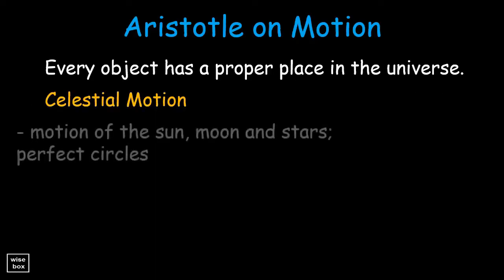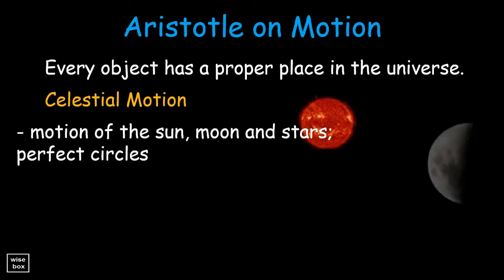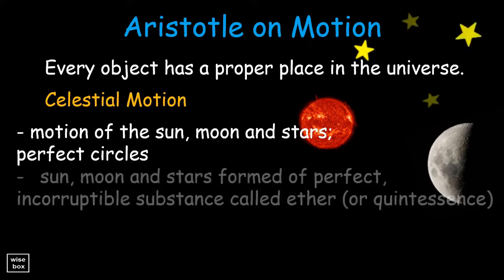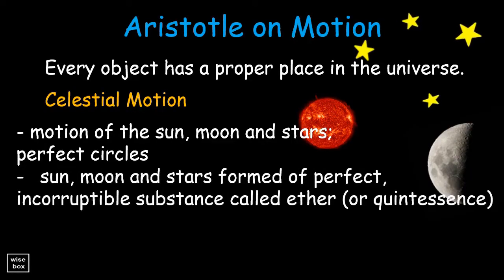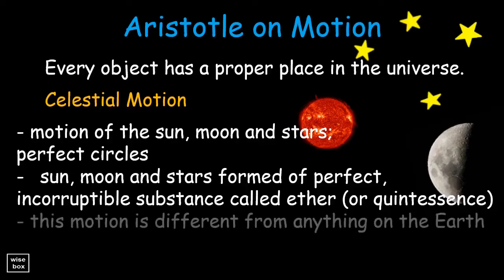Celestial motion includes motion of the sun, moon, and stars in perfect circles. The sun, moon, and stars are formed of perfect, incorruptible substance called ether, or quintessence, and this motion is different from anything on the earth.